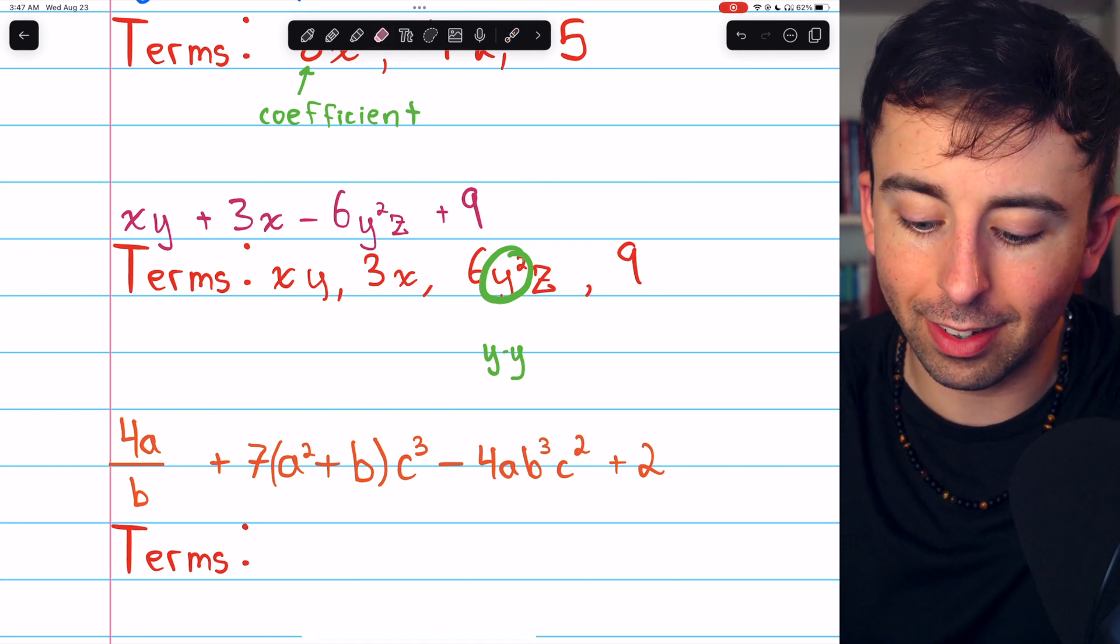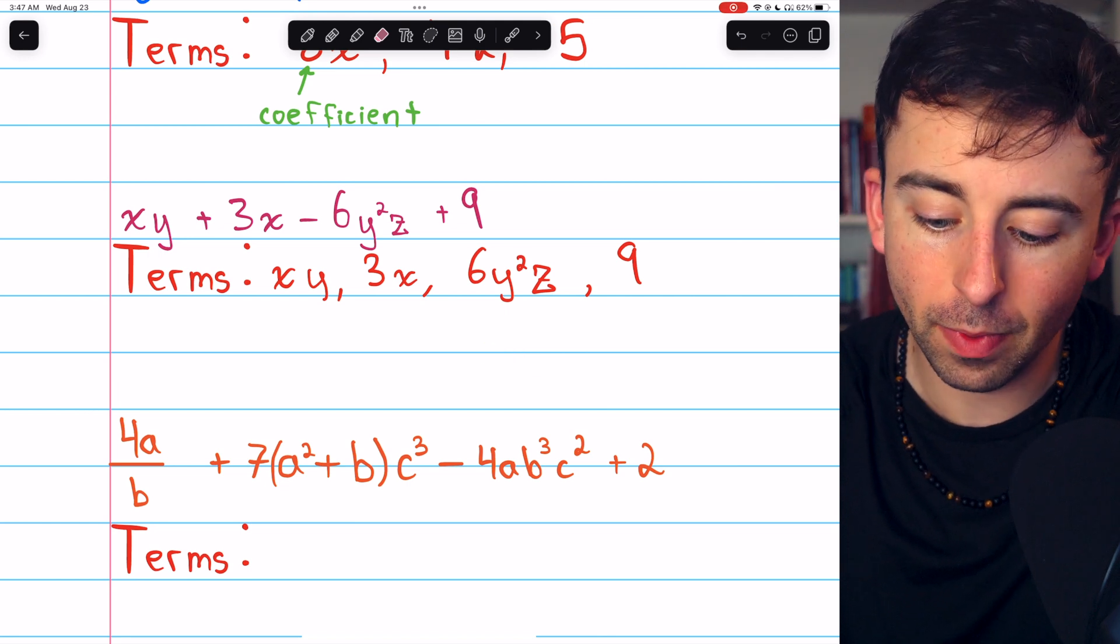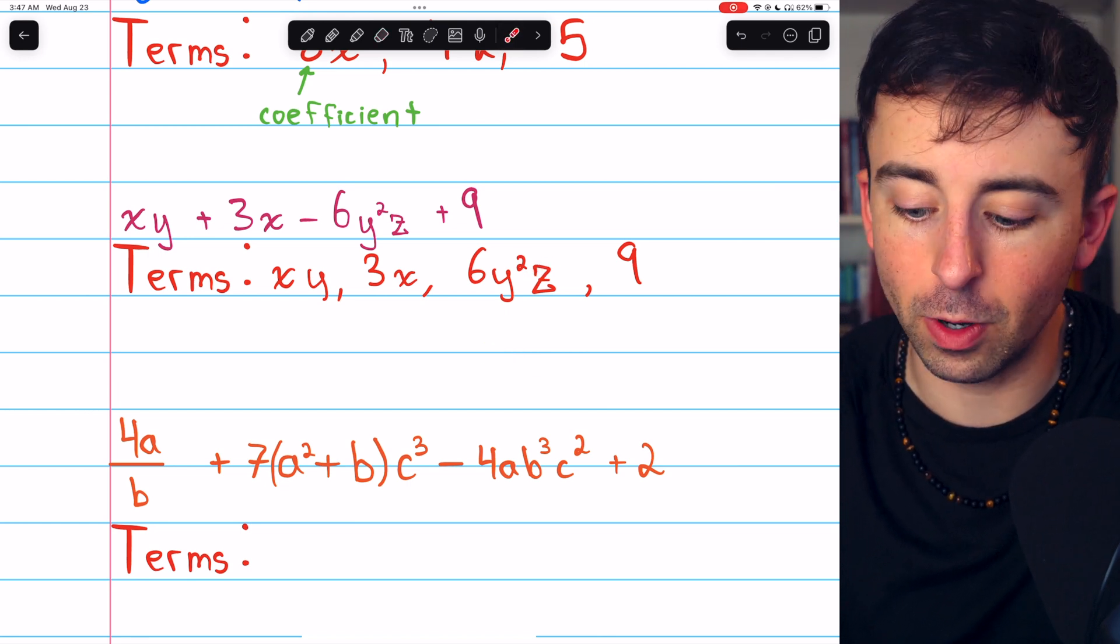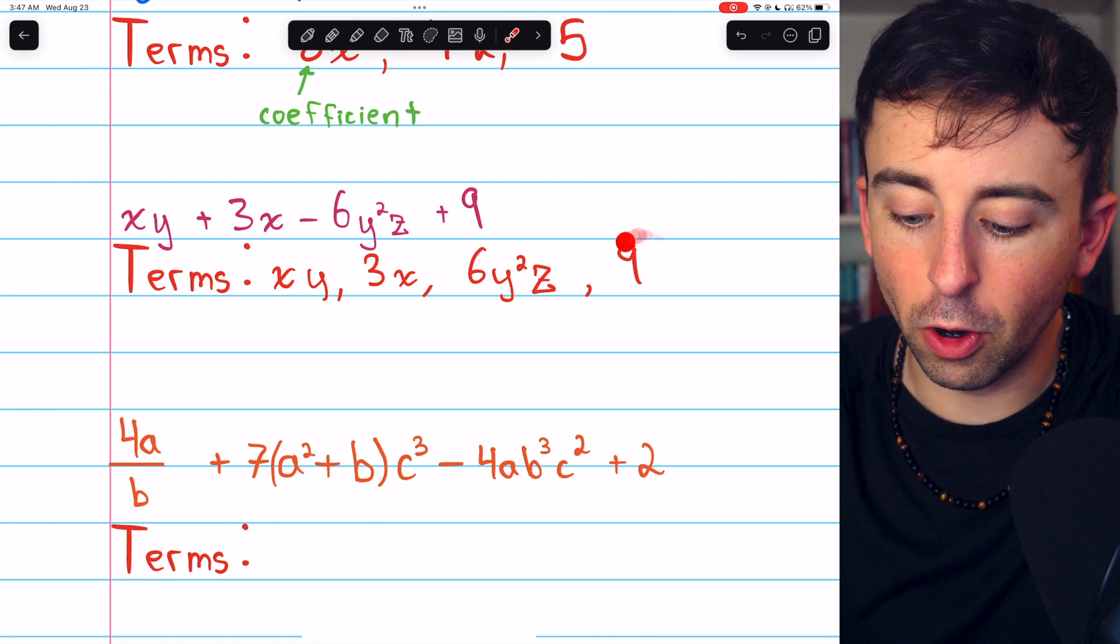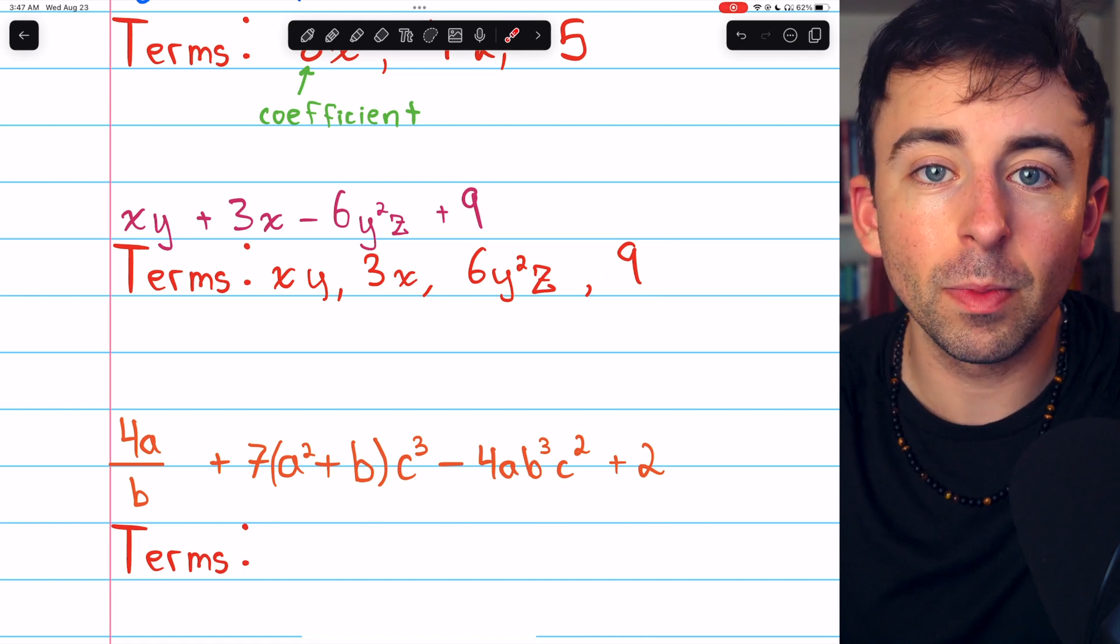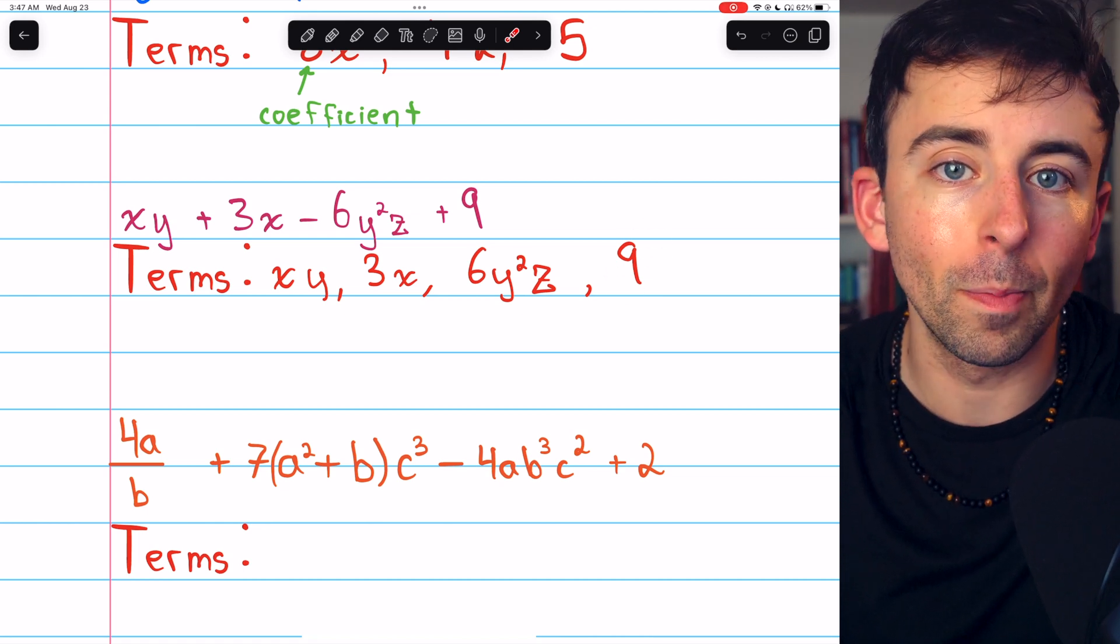In the same way that y squared is one variable, it just has an exponent other than 1. We still consider it, in most cases, to be one factor. And of course, z is the third factor here. And then the final term of 9 is one factor. It's just 9, a constant term all by itself.